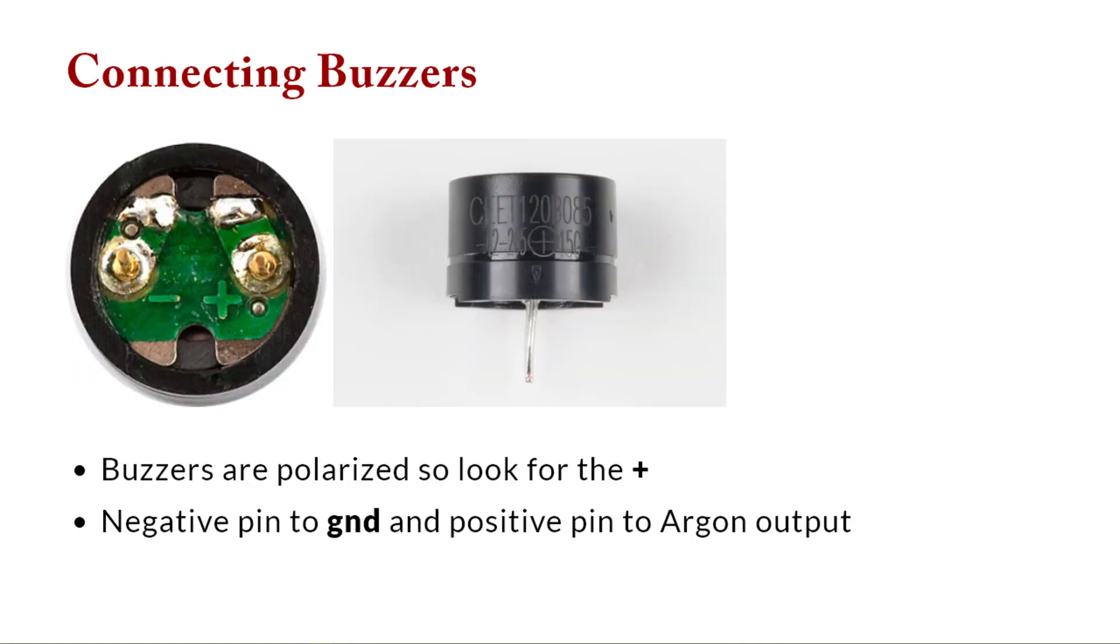Now these buzzers are polarized so look for this symbol. Either the plus on the bottom or the plus on the side otherwise it won't work properly. Make sure that the plus goes to the Argon and the ground goes to ground.